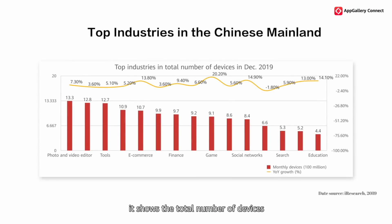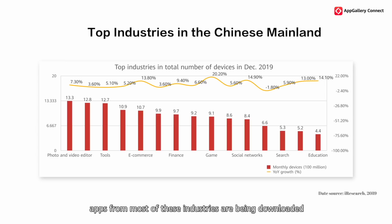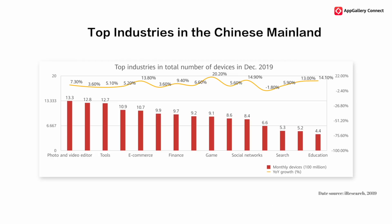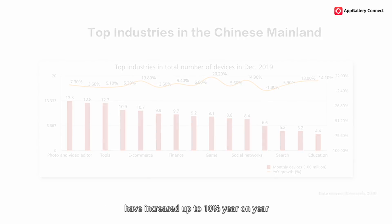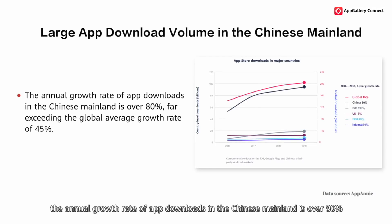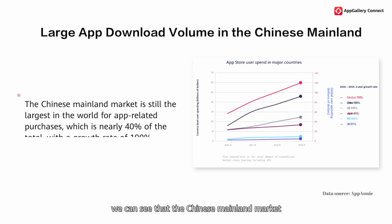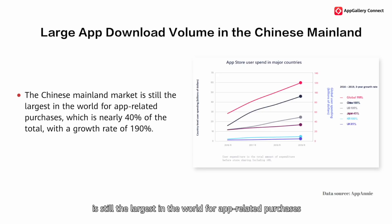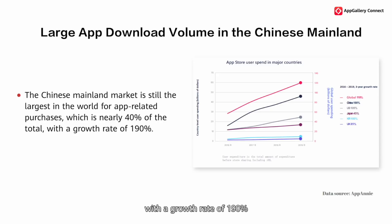If we look at this chart, it shows the total number of devices using apps from a specific industry in December of 2019. According to the chart, apps from most of these industries have been downloaded by an increasing number of Chinese users. For example, the number of users using education and e-commerce apps have increased up to 10% year on year. According to App Annie, the annual growth rate of app downloads in the Chinese mainland is over 80%, far exceeding the global average growth rate of 45%. The Chinese mainland market is still the largest in the world for app-related purchases, which is nearly 40% of the total, with a growth rate of 190%.